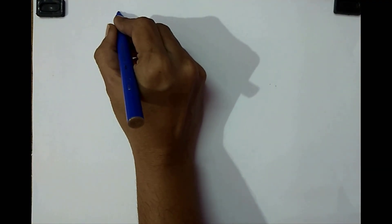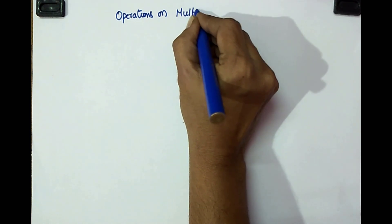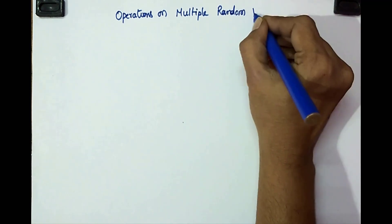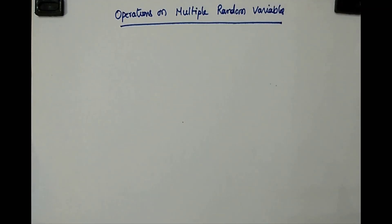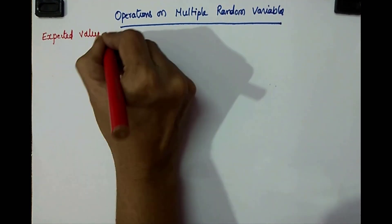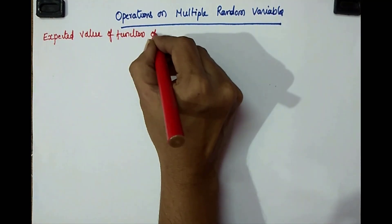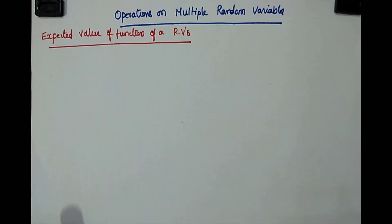Good day, everyone. In this class I want to explain operations on multiple random variables. We have already seen operations on single random variables; the same concepts are here extended to multiple random variables.